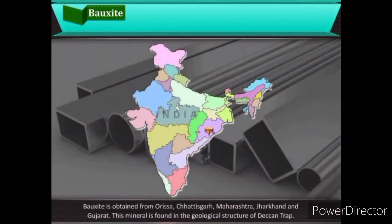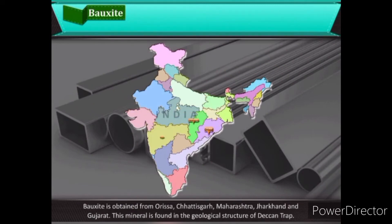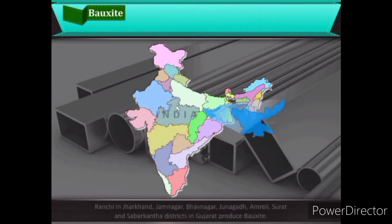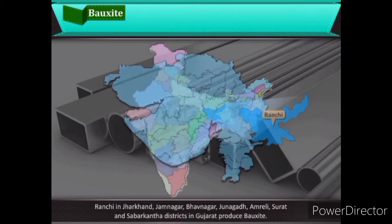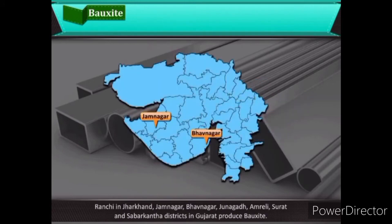Bauxite is obtained from Orissa, Chhattisgarh, Maharashtra, Jharkhand, and Gujarat. This mineral is found in the geological structure of the Deccan Trap. Ranchi in Jharkhand, and Jamnagar, Bhavnagar, Junagadh, Amreli, Surat, and Sabarkantha districts in Gujarat are major bauxite-producing areas.